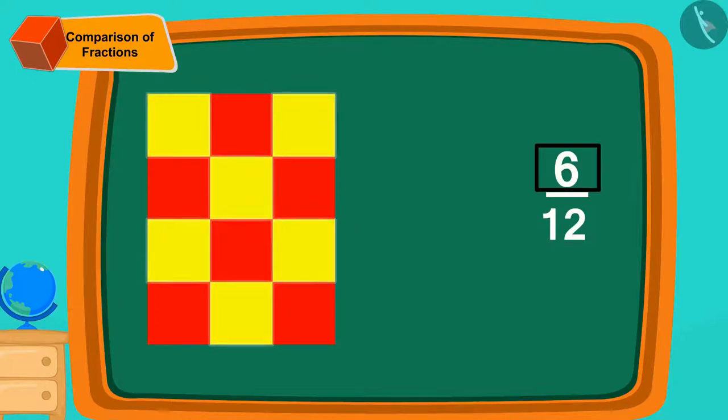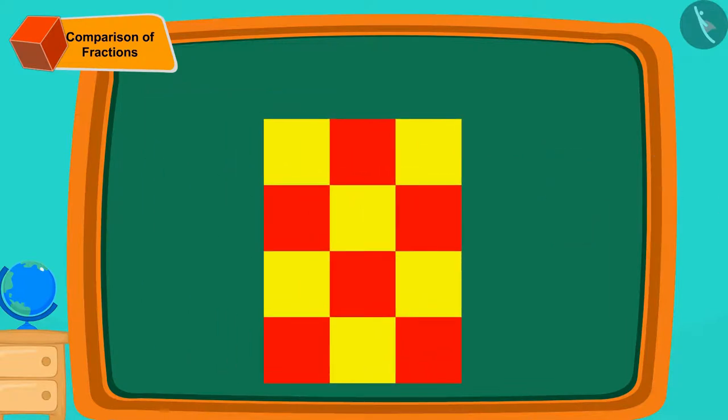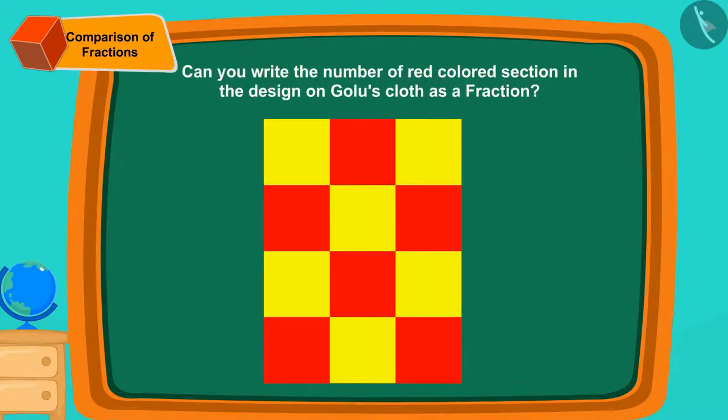And 6 tells us how many parts of it are yellow. Can you write the number of red-colored sections in the design on Golu's cloth as a fraction? Find the answer to this question by pausing the video.